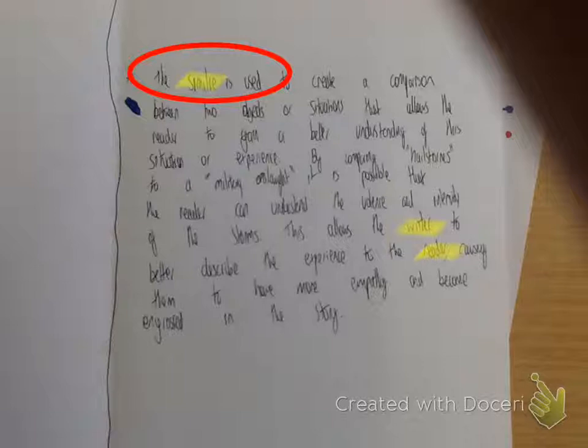You need to make a point first. Okay, so the reader can understand and visualize the intensity of the storm through the speaker's use of the simile. Or rather, the audience can understand it, not the reader. Yeah, so avoid the reader there.